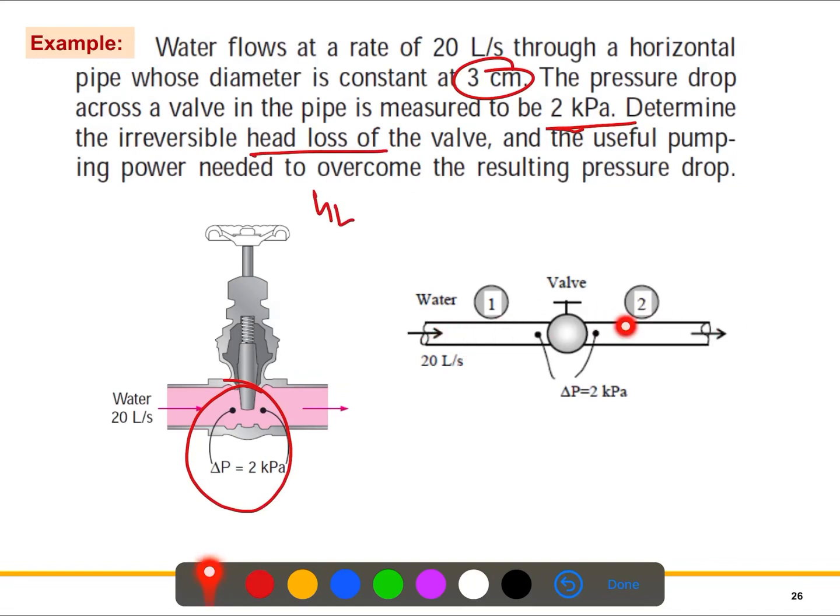For better understanding, we can draw it like this. This is the horizontal pipe, we have the valve here. So the flow rate, this is point 1, point 2. The delta P is the pressure drop between point 1 and 2.